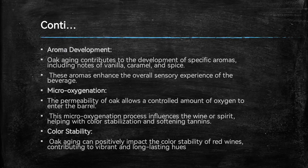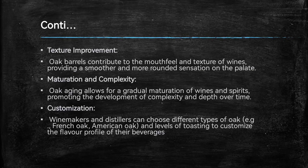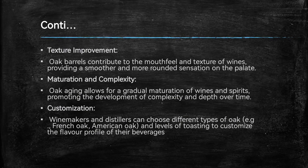Color stability: Oak aging can positively impact the color stability of red wines, contributing to vibrant and long-lasting hues. Texture improvement: Oak barrels contribute to the mouthfeel and texture of wines, providing a smoother and more rounded sensation on the palate. Maturation and complexity: Oak aging allows for a gradual maturation of wines and spirits, promoting the development of complexity and depth over time. Customization: Winemakers and distillers can choose different types of oak — for example, American oak or French oak — and levels of toasting to customize the flavor profile of their beverages.